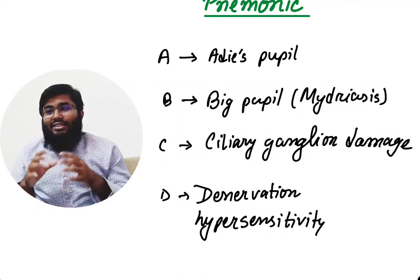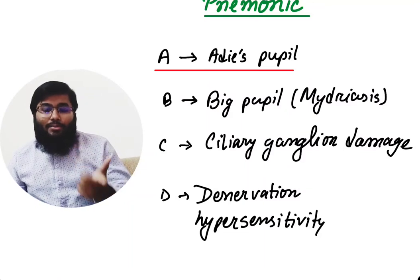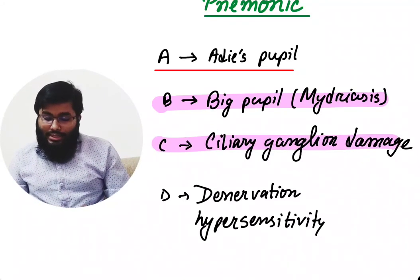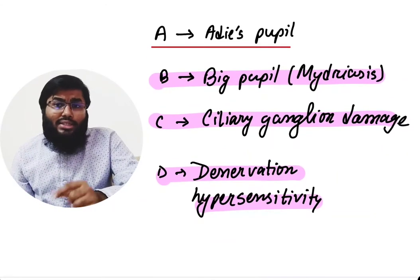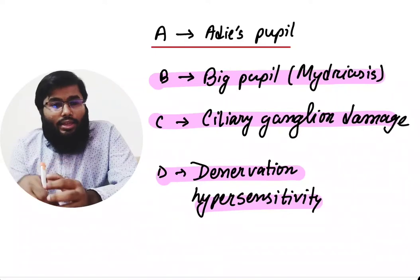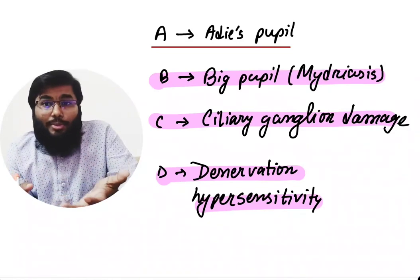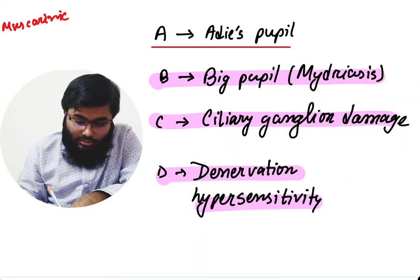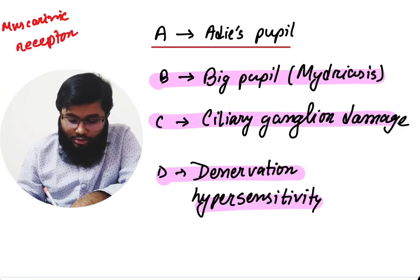There is a mnemonic that summarizes all the topics: A-B-C-D-P-P-V. A for Adie pupil, B for big pupil (miosis/mydriasis occurs in that case), C for ciliary ganglion damage, and D for denervation hypersensitivity. As the parasympathetic fibers are damaged, there is no stimulation from the parasympathetic fibers, and as a result the muscarinic receptors will be upregulated.